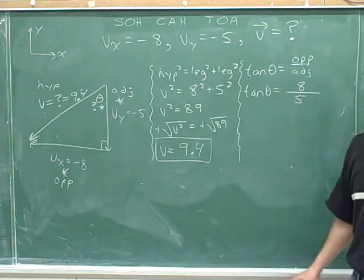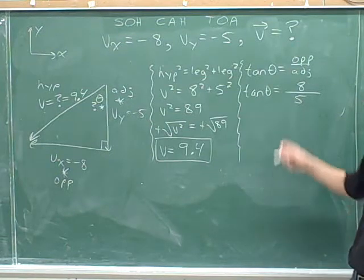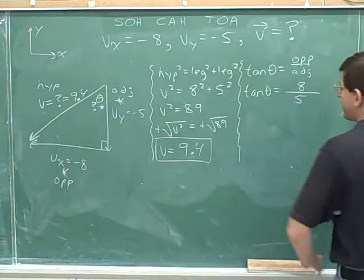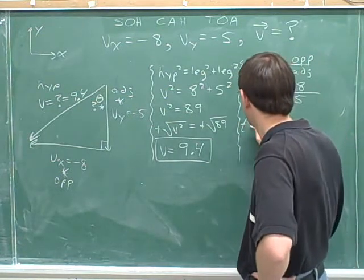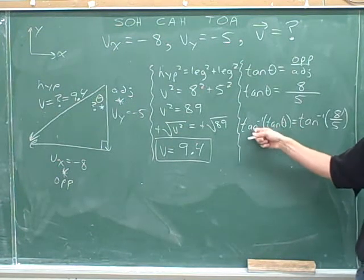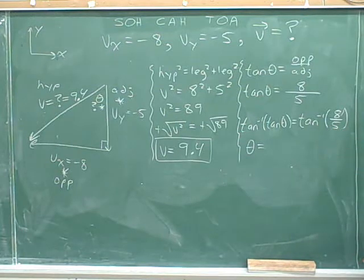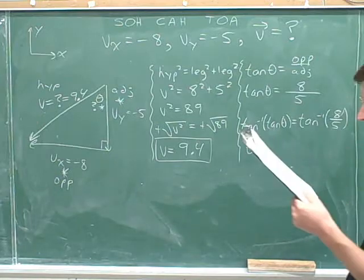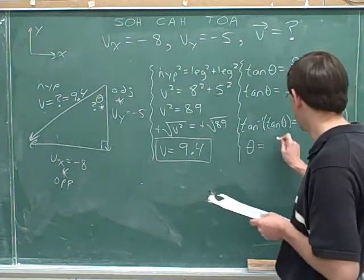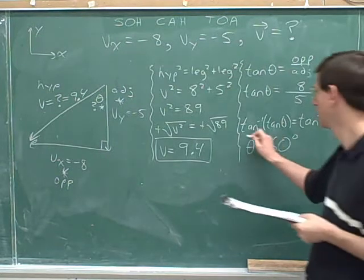Do not plug in signed numbers when dealing with trig functions, because here we're just dealing with the length of the opposite and adjacent sides. In order to get theta by itself, we remove the tangent function by taking the inverse tangent. The inverse tangent of 8 over 5 is approximately 60 degrees. That's part of our answer.